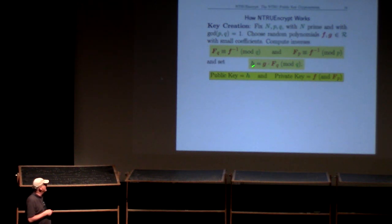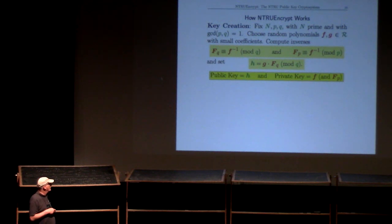And then her public key is little g, this small polynomial, multiplied not by little f, but by the inverse of little f mod q. And that computation is done where the coefficients of the polynomials are mod q coefficients. And now her public key is h. Her private key is this small coefficient polynomial, little f.